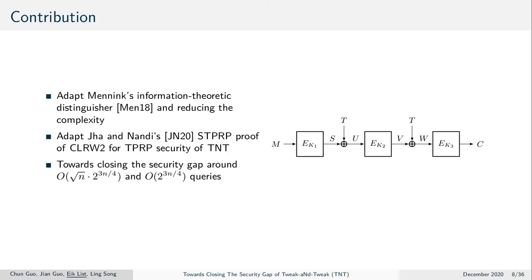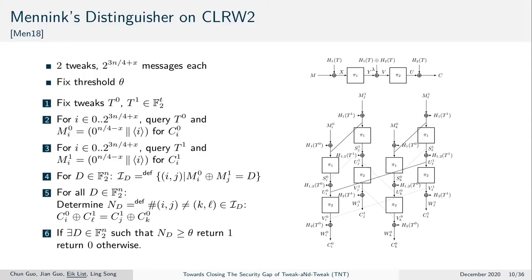We found that the TNT construction shares strong similarities to the two-round cascaded LRW design. We found that a variant of Manning's distinguisher seemed to work also on generic TNT, and we had to reduce the complexity for it to not only be an information-theoretic distinguisher. Moreover, we found that the Jha-Nandi proof of 3n/4 security for CLRW2 could be transformed into a forward-only security result on TNT. We then consider the distinguishers on TNT, and first have a close look at Manning's distinguisher on CLRW2.